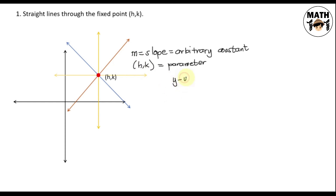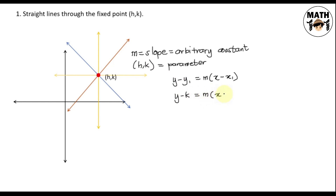Point-slope form: y minus y₁ equals m times the quantity x minus x₁. With the given parameter fixed point, we substitute h for x₁ and k for y₁, giving us: y minus k equals m times the quantity x minus h.